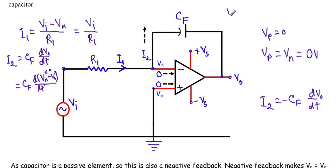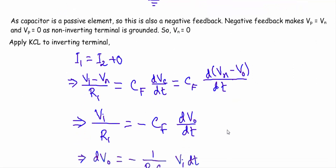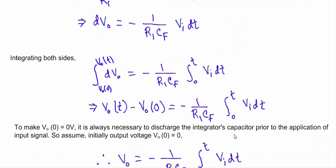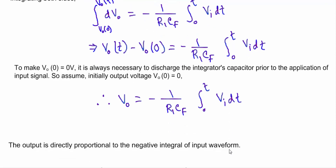With VO(0) equal to zero volts, we get the final expression: VO equals minus 1 divided by R1·CF times the integral from zero to T of VI dt. The output is therefore directly proportional to the negative integral of the input voltage.